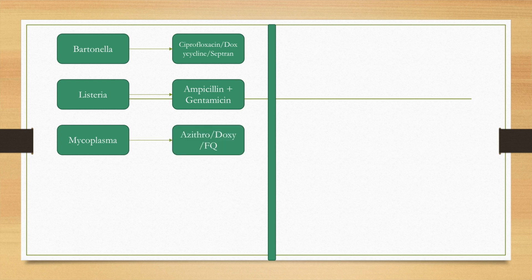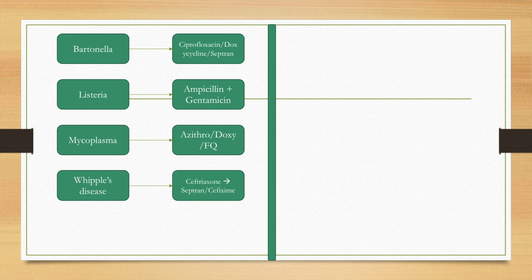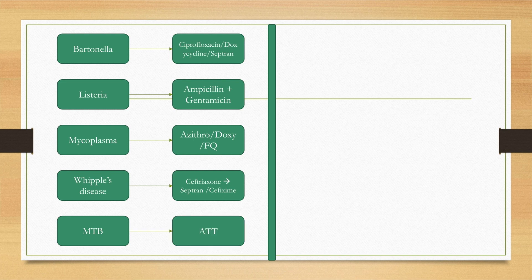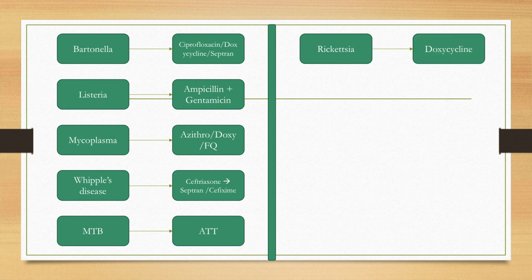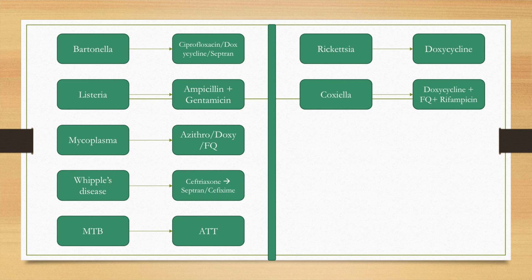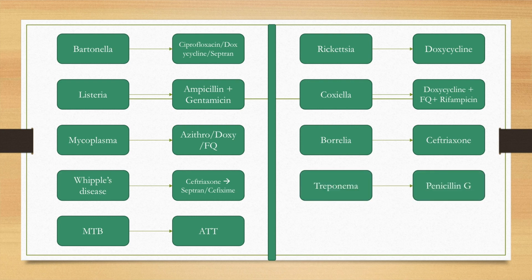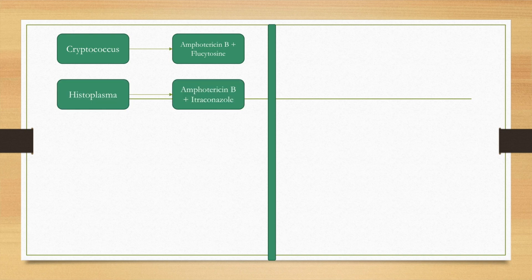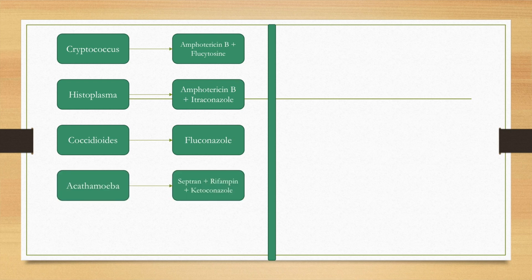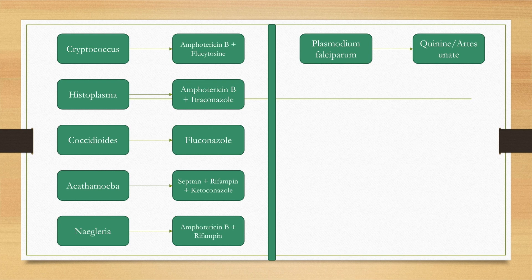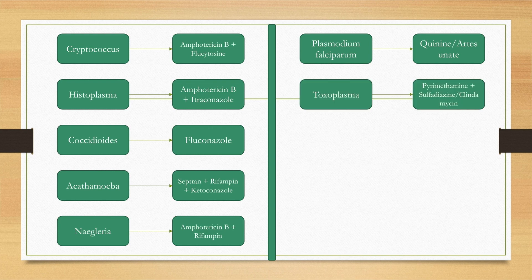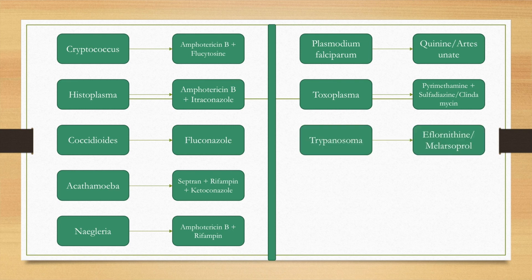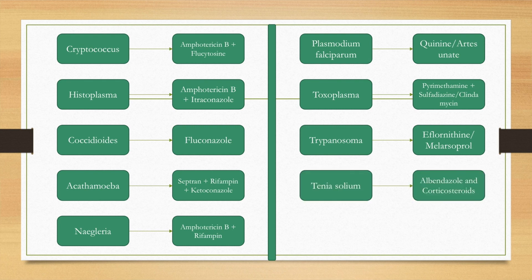Whipple's disease can be treated with ceftriaxone, septran, and cefixime. Mycobacterium tuberculosis is treated with anti-tubercular therapy. Rickettsia and Coxiella burnetii are treated with doxycycline, with the addition of a fluoroquinolone and rifampicin for Coxiella. Borrelia burgdorferi is treated with ceftriaxone. Treponema pallidum is treated with penicillin G. Cryptococcus with amphotericin B and flucytosine. Histoplasma with amphotericin B and itraconazole. Coccidioides with fluconazole. Acanthamoeba with septran, rifampicin, and ketoconazole. Naegleria with amphotericin B and rifampicin. Plasmodium falciparum with quinine or artesunate. Toxoplasma with pyrimethamine, sulfadiazine, or clindamycin. Trypanosoma with eflornithine or melarsoprol. Taenia solium with albendazole and corticosteroids.